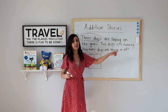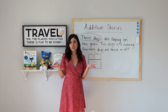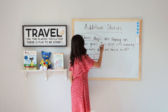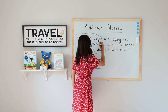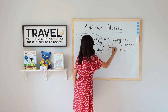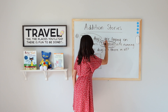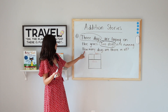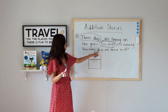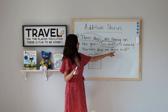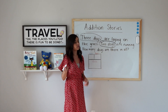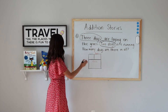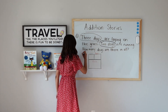Two dogs are running. How many dogs are running? Two. So let's circle two dogs. Now I need to know how many dogs are there in all, so what I like to do with my question is underline it.